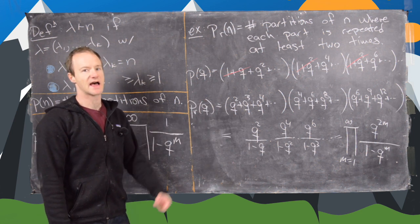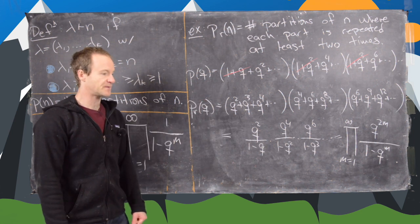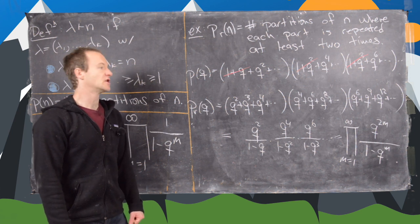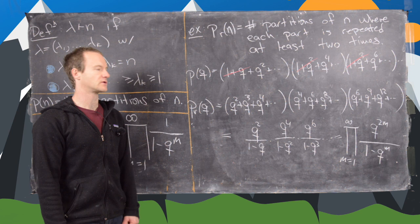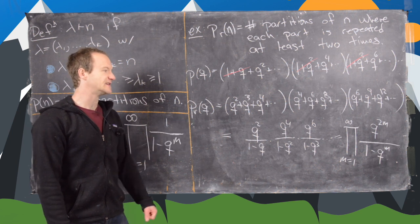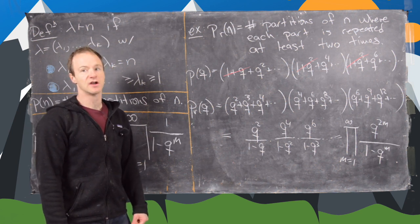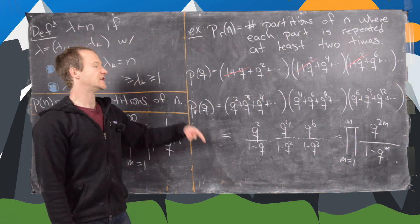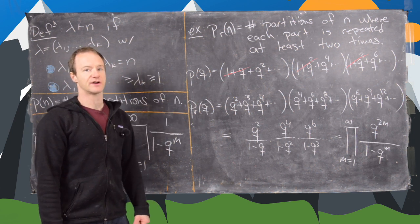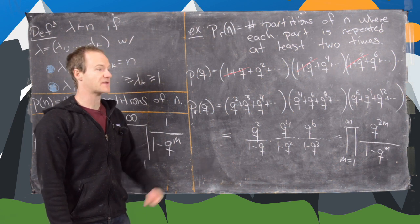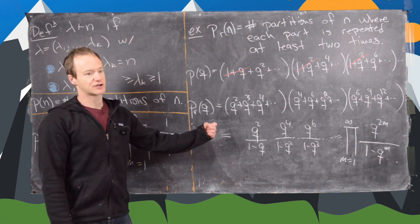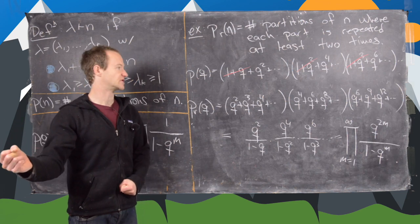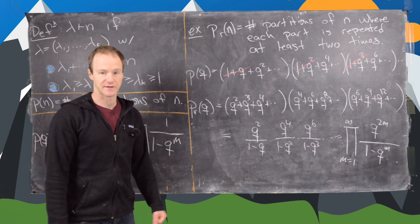The real takeaway here is that, while it's hard to find an explicit formula for the number of partitions with a given restriction, it's quite easy to write down a generating function for that count. In the next video, we'll use this ability to write down generating functions to prove theorems showing that certain restricted partition counts equal certain other restricted partition counts.